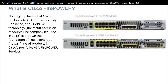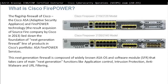Firepower is the flagship firewall of Cisco — the Cisco ASA and Firepower technology together. Cisco acquired a company called Sourcefire and combined it into Firepower. They use it as a next-generation firewall. The next-generation firewall is composed of the well-known ASA OS and software modules that handle application control, intrusion protection, anti-malware, and URL filtering.